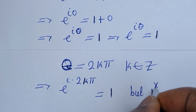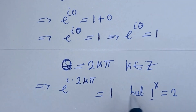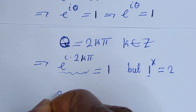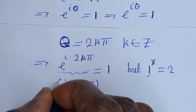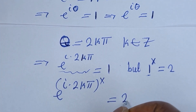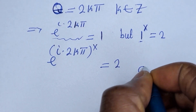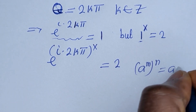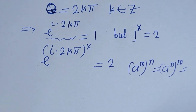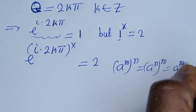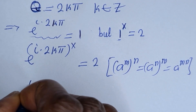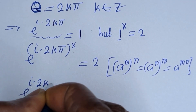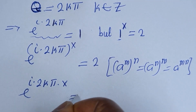But 1 raised to power s is equal to 2, and you see the 1 here. So we substitute: e raised to i times 2k pi, all raised to the power of s, is equal to 2. Using the rule that a raised to power m to the power of n equals a raised to power m times n, this can be written as e raised to i times 2k pi times s is equal to 2.